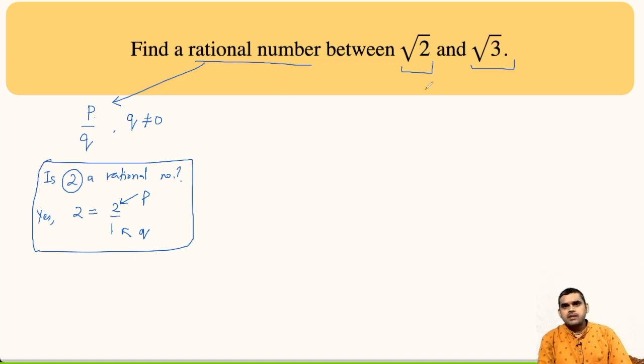Now, coming back to the question. So, first of all, we must know about the value of root 2, that is 1.414, and the value of root 3 is 1.732.